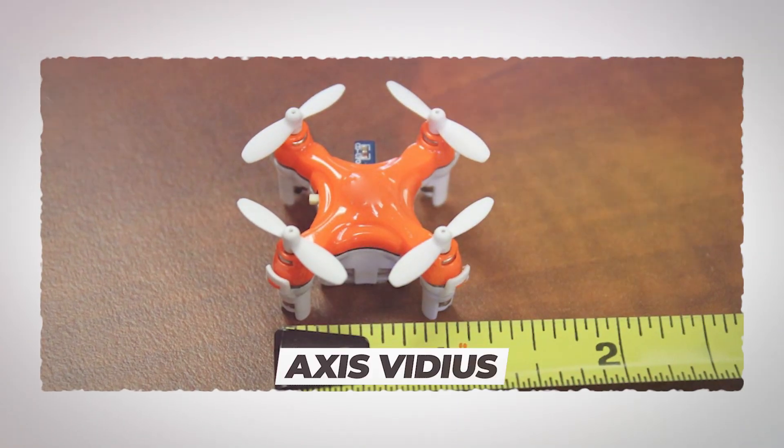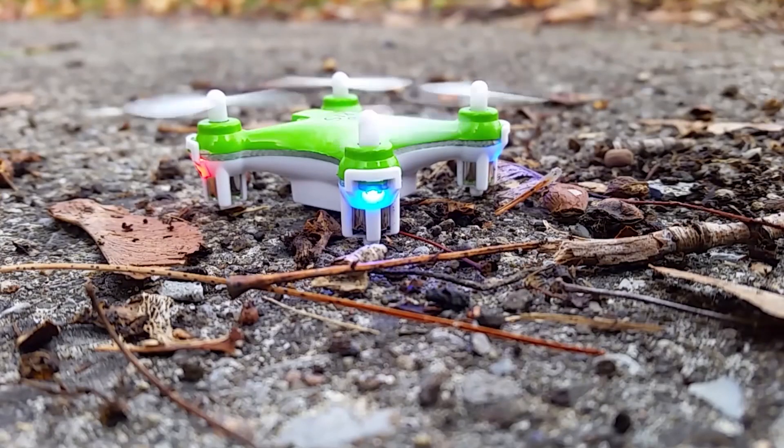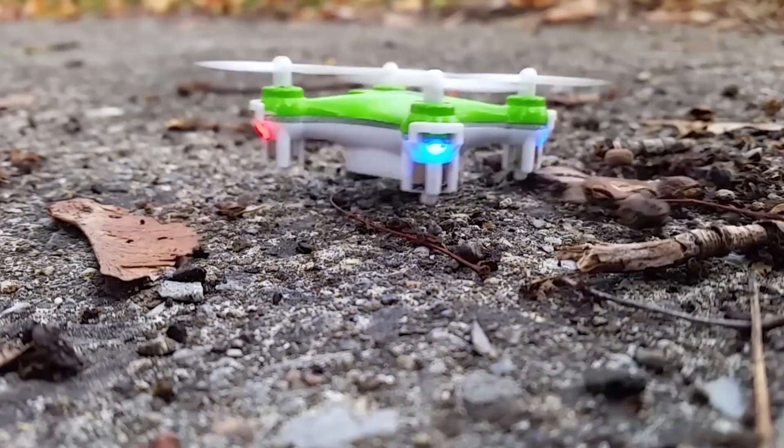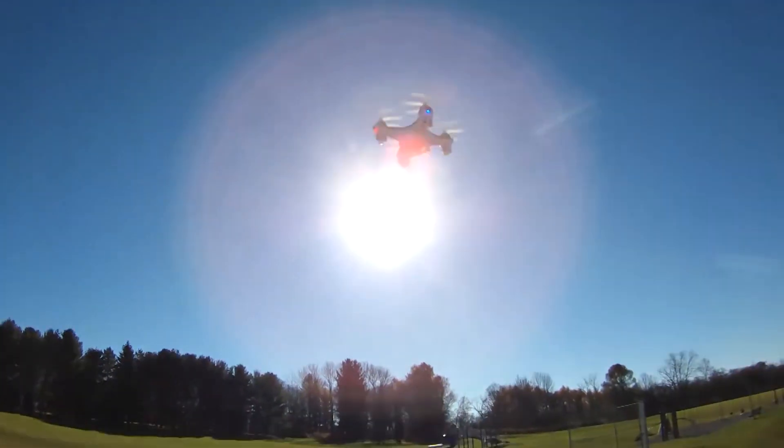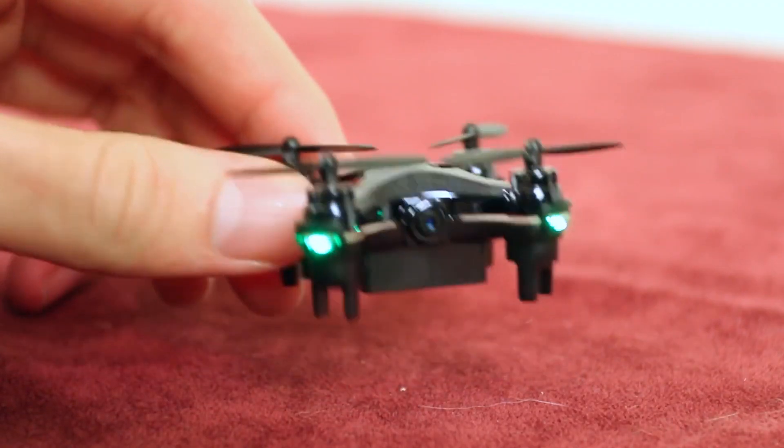Number 2. Axis Vidius. Officially declared as the world's smallest drone by the Guinness World Records, Axis Vidius weighs under 0.55 pounds. A video camera sits in it, allowing the drone to capture videos in 420 pixels.